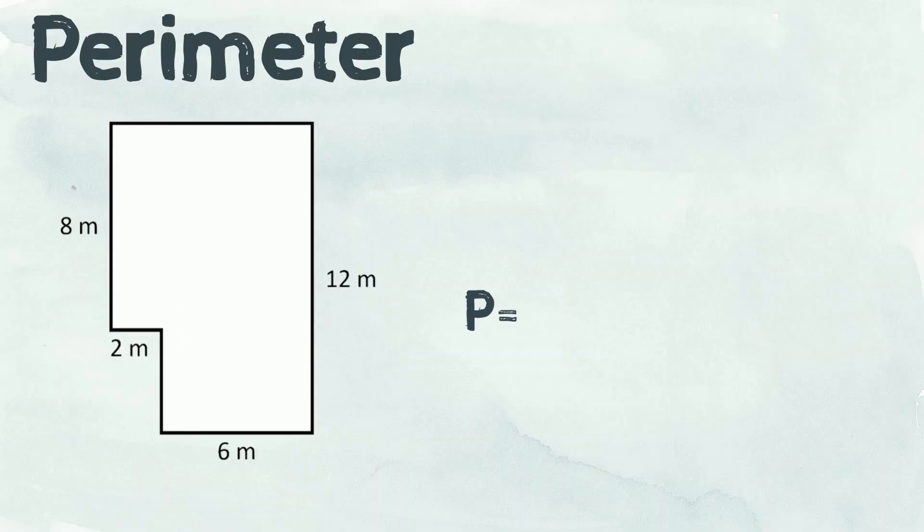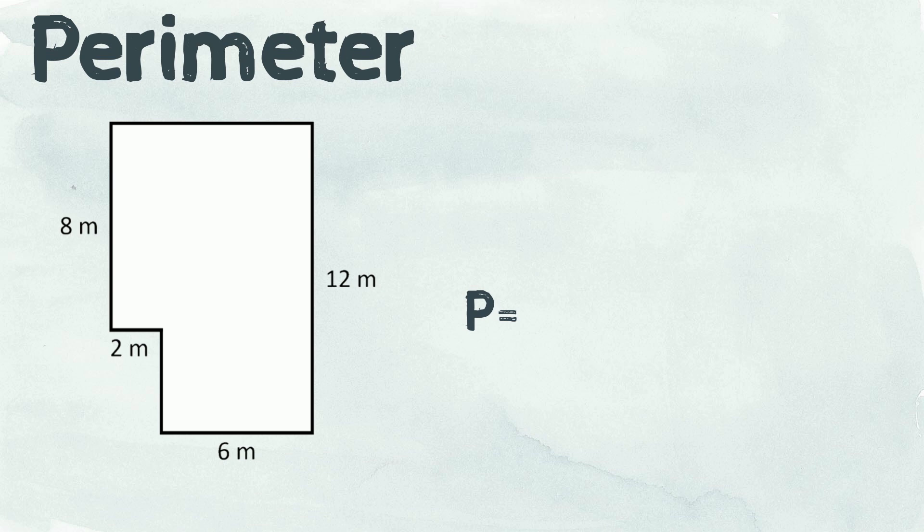Let's find the perimeter of this irregular shape. We haven't been given the measurement of each side, so we'll have to work them out ourselves. We don't know this measurement, but we can use these two measurements to help us work it out. 2 meters plus 6 meters. The measurement we're missing must be 8 meters.